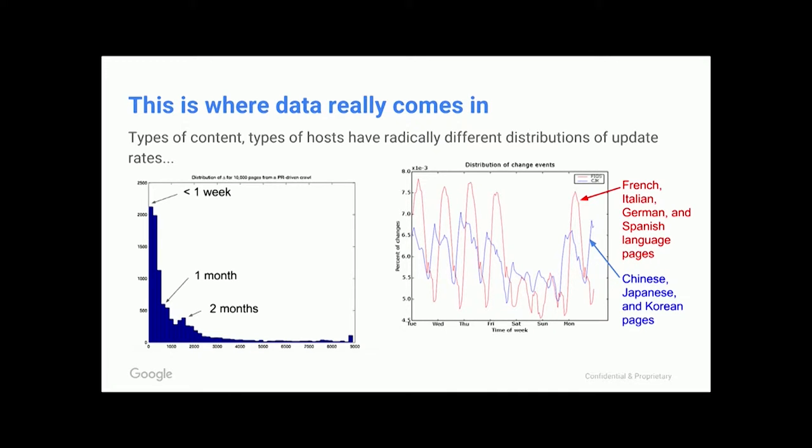You can see that different languages have very different appearances. This shows time of week in Pacific Standard Time. The red line shows the update rate for French, Italian, German, and Spanish language pages. The blue line shows the update rate for Chinese, Japanese, and Korean pages. European webmasters have a much more tightly defined workday than some of the other languages — though some of this is the spread of time zones — and it's very hard to tell whether a page is being updated from its natural country association or from someone working in that language in the US.